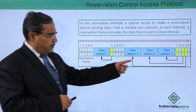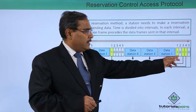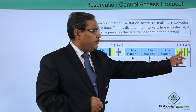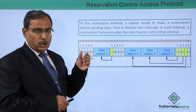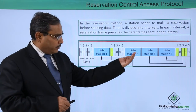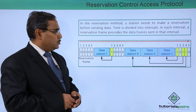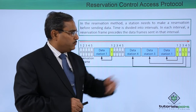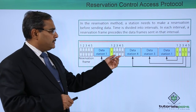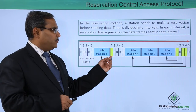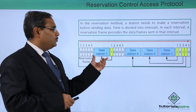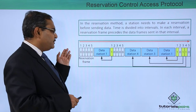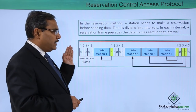Just look here. We have respective slots and reservations have been made for stations 1, then 3, then 4. These are the respective nodes that have reserved, and accordingly they are sending their data frames. You see data station 4, data station 3, data station 1. In this particular case, data station 1 has done the reservation, so it will get a slot to transfer its data. Here, no reservation has been done in the reservation frame.